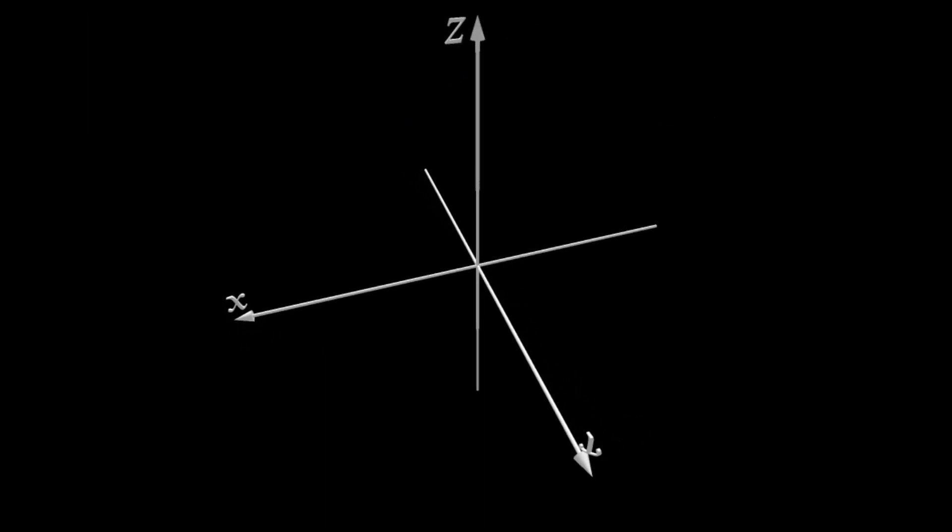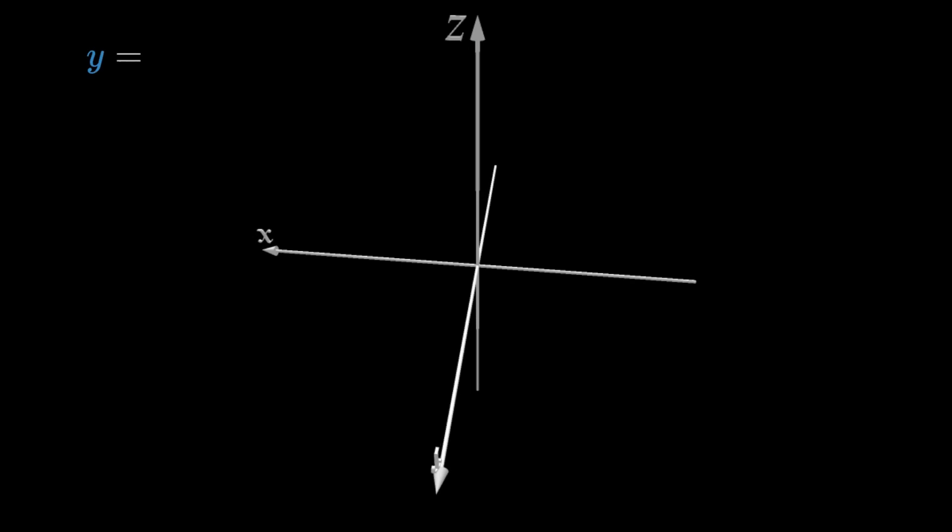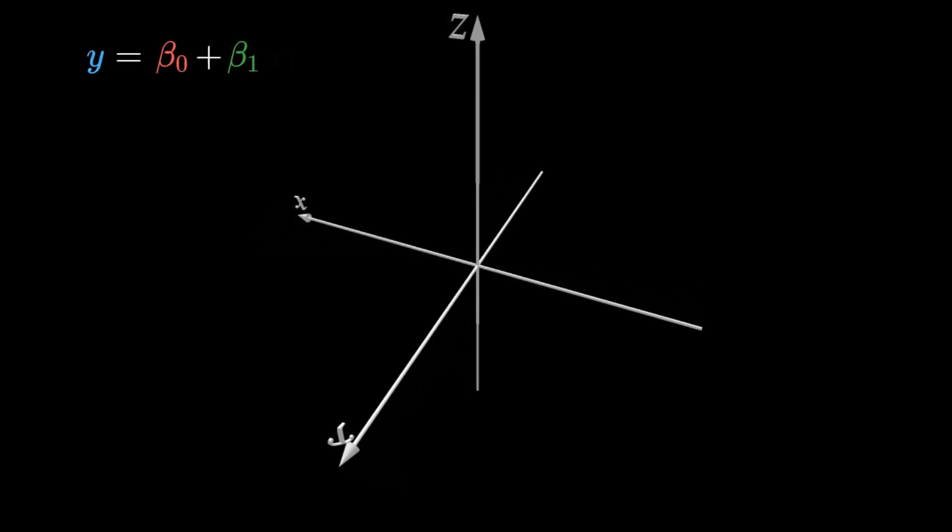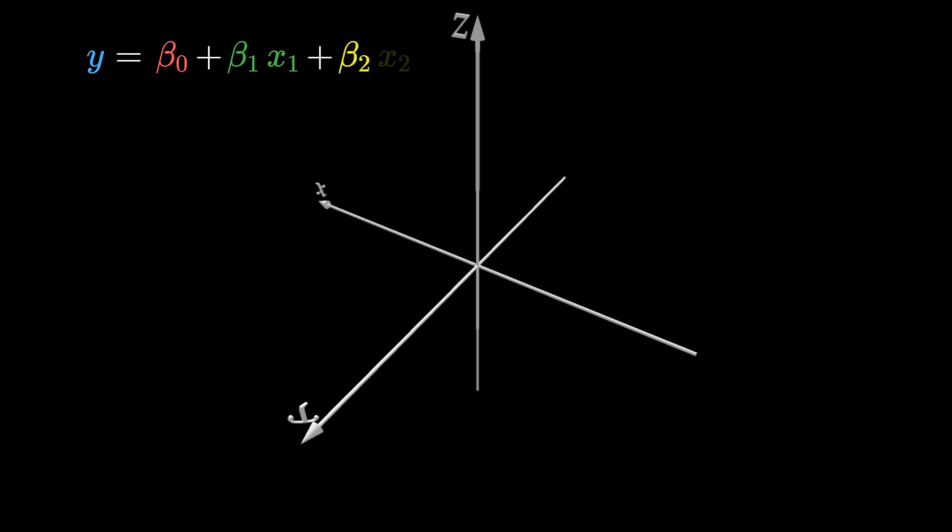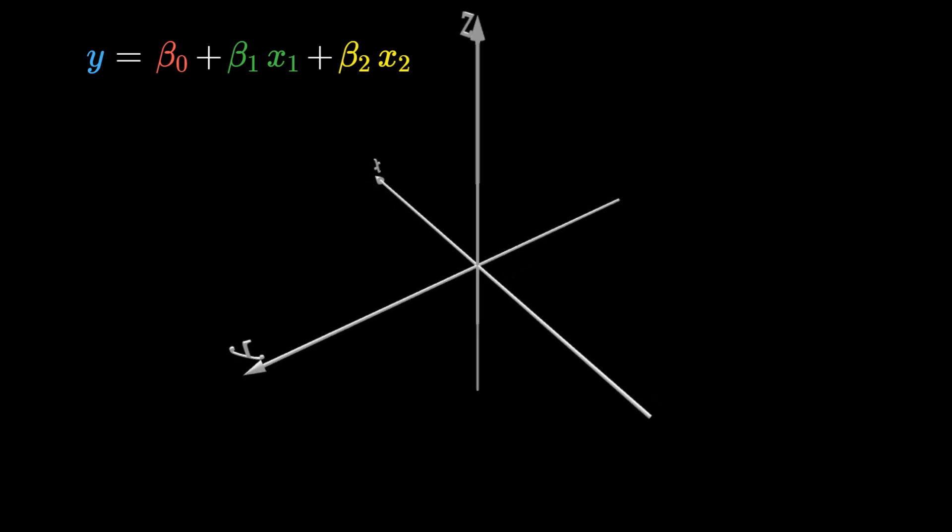Stepping up one dimension, in the case where we have two input variables and one output variable, the linear relationship will look like y equals an offset plus beta1 times x1 plus beta2 times x2. Now that we have three coefficients, how do we solve for them?